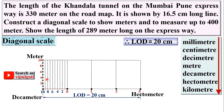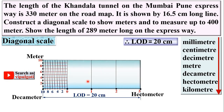Draw vertical lines through all those points. Now, as the name indicates — diagonal scale — you have to draw the diagonal. Assume the first cell as a right-angle triangle; the hypotenuse represents the diagonal. Draw the diagonal, then draw all the remaining diagonals parallel to it. This completes your diagonal scale — the first task is done.